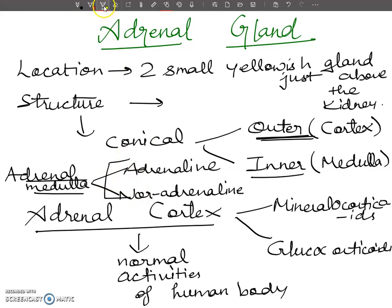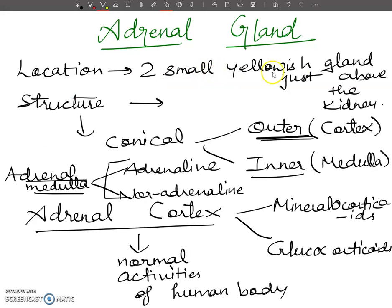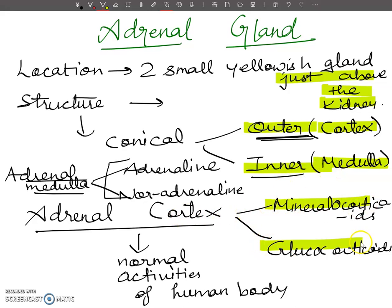You have to remember some key points: the adrenal gland is located just above the kidney and has two parts — the cortex, which is outer, and the medulla, which is inner. The cortex secretes two hormones — mineralocorticoids and glucocorticoids — and the medulla secretes two hormones — adrenaline and noradrenaline.